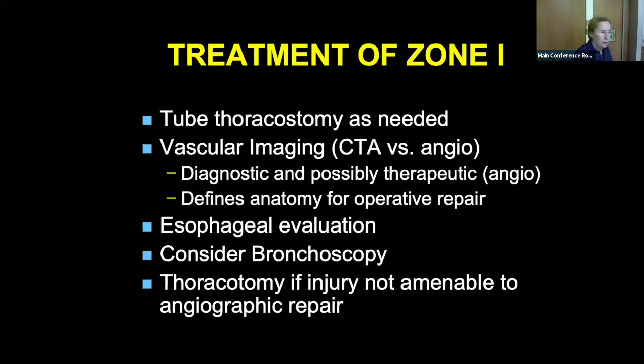For zone one: think of thoracic injuries, tube thoracostomy if you need it. Think about which vessels might be injured, and always think about the airway and the esophagus.